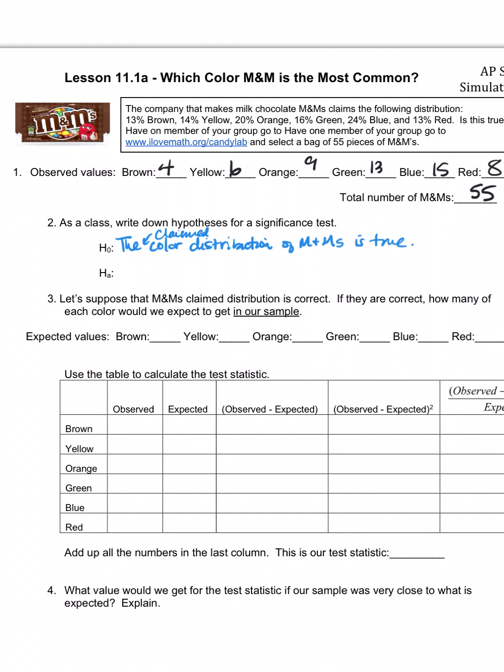Then what do you think the alternative would be? It's not true. So it's definitely a not equal. The claimed color distribution of M&Ms is not true. It's always going to be a not true in your alternative with chi-square. We don't do less than or greater than, because we're not dealing with numbers.